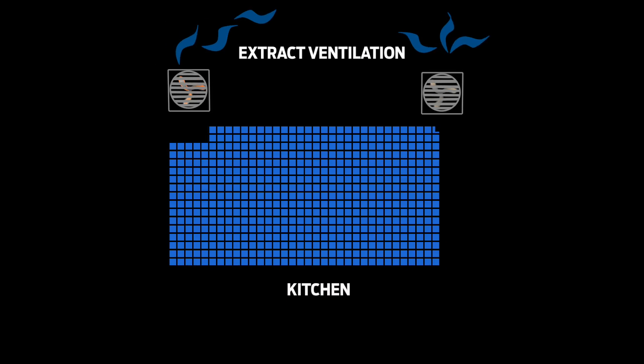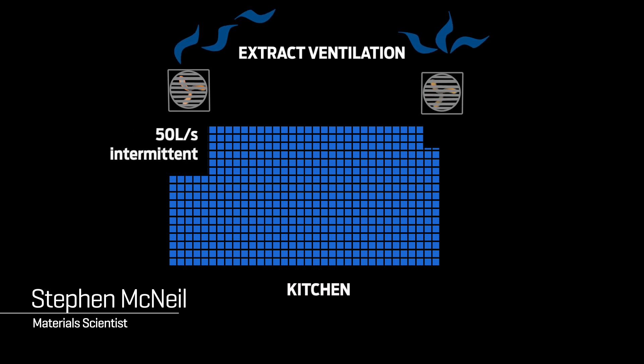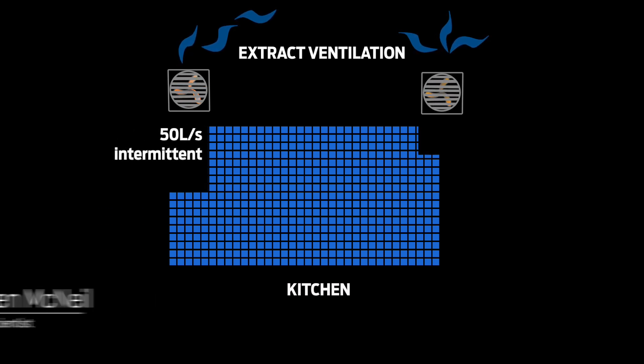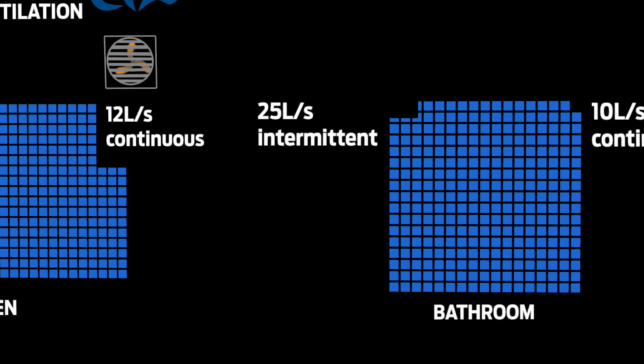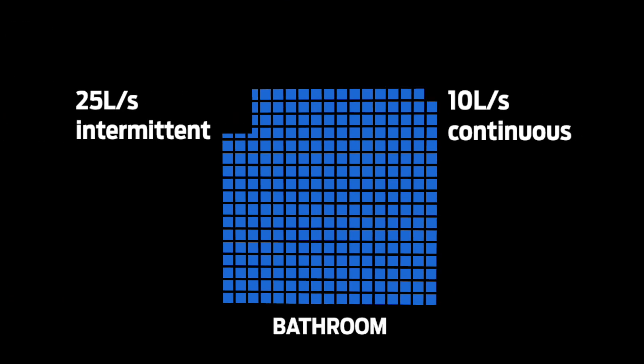When it comes to extract ventilation, the code is fairly simple. NZS 4303 specifies 50 litres per second intermittent in kitchens, lowering to 12 litres per second when running continuously. This drops to 25 litres per second and 10 litres per second for the case of bathrooms.